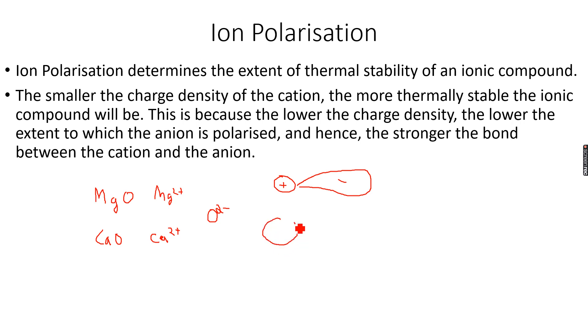Whereas the Ca2+ ion, which is bigger with the same charge, let me also write 2+ over here, it will polarize the ion slightly less than the Mg2+ ion because the charge density on the Ca2+ ion is lower.